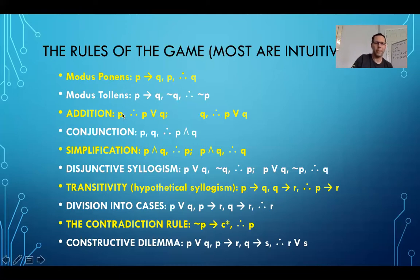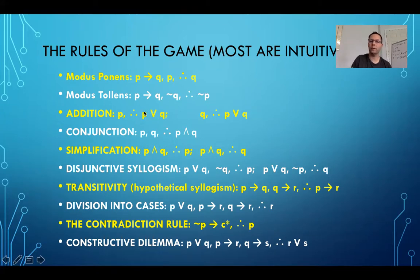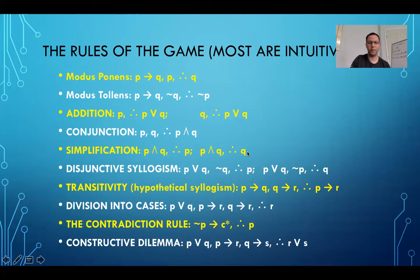Then there are these other things. P, therefore P or Q — I can add anything to an or statement if the first thing is true. I could say I ate a sandwich for lunch, or the moon is made of moldy cheese, as long as I ate a sandwich for lunch. So that's helpful if you want to introduce something into a statement. Conjunction: if I have P and I also have Q, I have P and Q. Simplification is really nice: if I have P and Q, if that's true, I have P and I also have Q — that's simplification, because 'and' means I have everything on either side of the and.